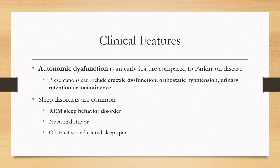Autonomic dysfunction is a main early feature of multiple system atrophy, as compared to Parkinson's disease where it arises later. The main presentations can include erectile dysfunction in men, orthostatic hypotension, and urinary retention, urgency, or incontinence.